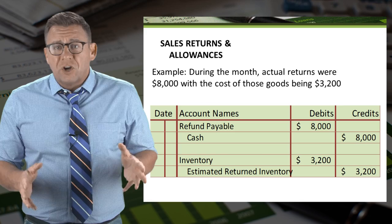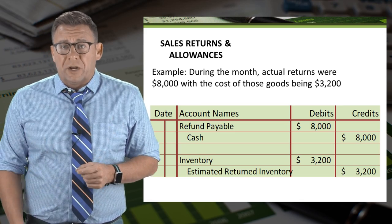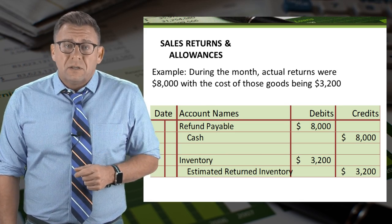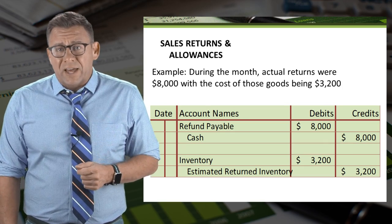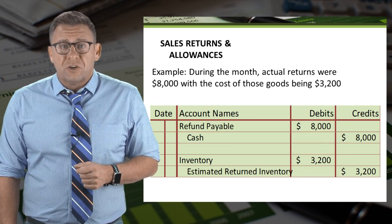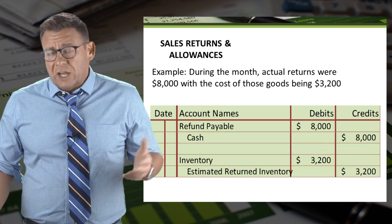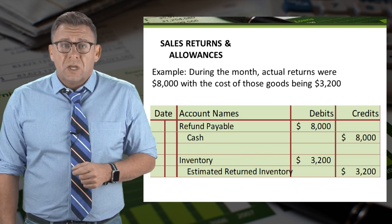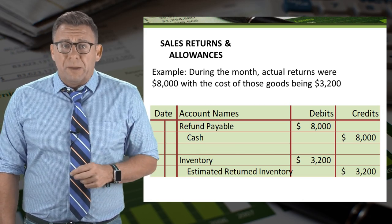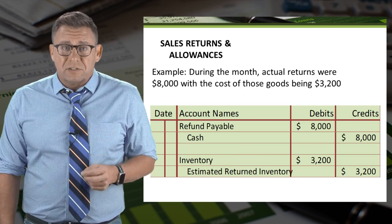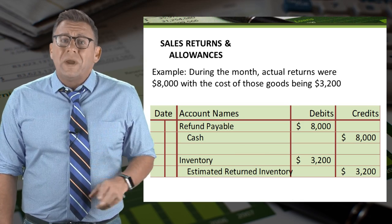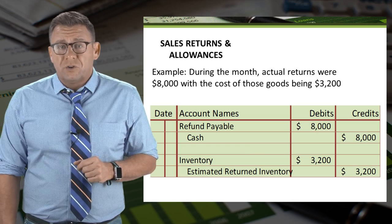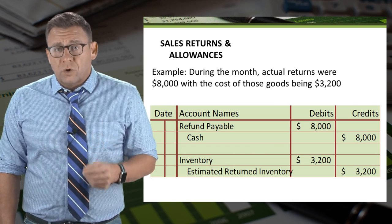Once the month is over, we can record the actual amount of returns and correct our estimates. In this example, assume that $8,000 of goods were returned. Those goods had a cost of $3,200. So we debit refund payable and credit cash for $8,000. Then we debit inventory and credit estimated return to inventory for $3,200.